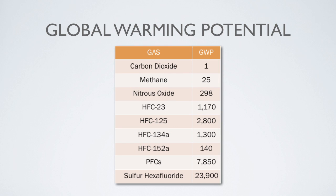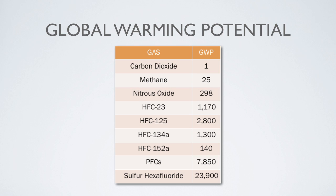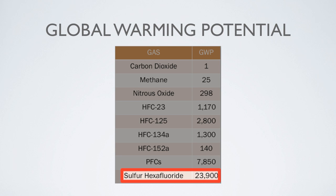This chart shows the global warming potential of each of the six GHGs. For example, methane has a global warming potential of 25. This means that methane is 25 times more potent than carbon dioxide. In other words, emitting one tonne of methane into the atmosphere has the same warming effect as emitting 25 tons of carbon dioxide. As you can see from the chart, HFCs, PFCs, and sulfur hexafluoride are extremely potent greenhouse gases. The EPA refers to these gases as high global warming potential gases. In fact, sulfur hexafluoride has nearly 24,000 times the heat-trapping ability of carbon dioxide. Note that since carbon dioxide is being used as a benchmark, by default, its GWP is 1.